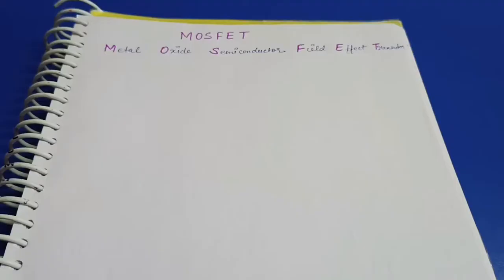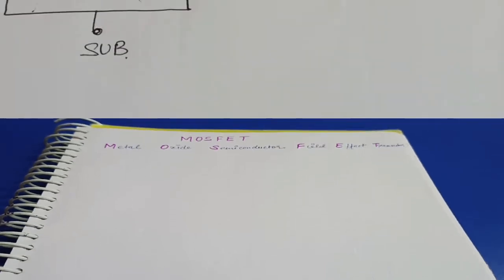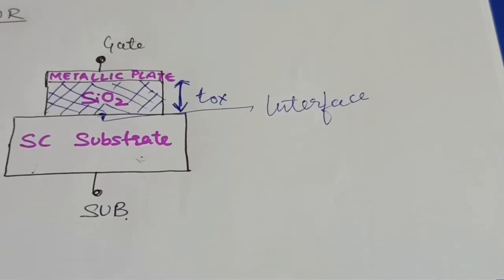Welcome back to the channel. This video is an introduction to MOSFETs. MOSFETs are the metal oxide semiconductor field effect transistor, also known as IGFET, which is insulated gate field effect transistor. Now let's first discuss the MOS capacitor.